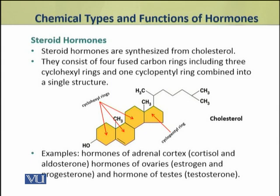The examples of steroid hormones include hormones of the adrenal cortex — cortisol and aldosterone — hormones of the ovaries, that is estrogens and progesterone, and the male sex hormone produced by the testes, that is testosterone.